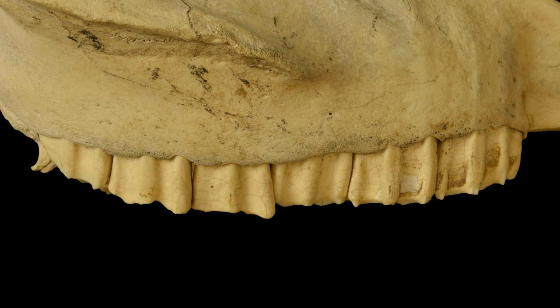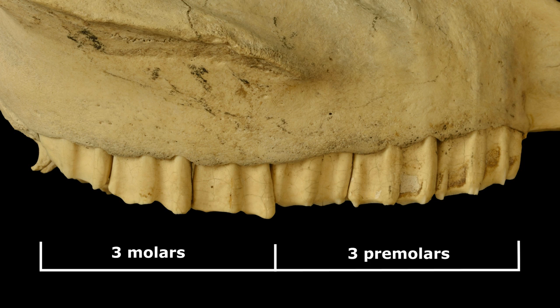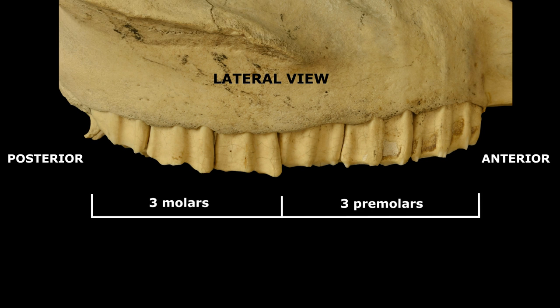Now we can zoom in on the six cheek teeth, which include the three premolars and three molars. The posterior is on the left, and anterior on the right. Notice the distinct ridges in the middle of the teeth, which can be a good way to tell which side of the tooth is lateral. Another term we use for this side of the tooth is labial, or toward the lips or cheek.